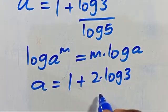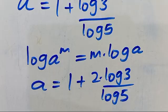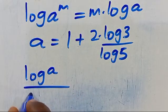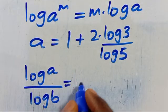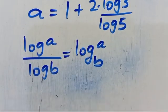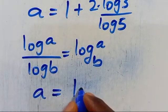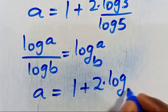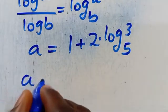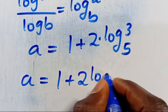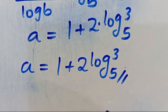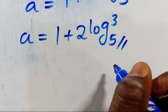Recalling that log a divided by log b equals log a in base b, we apply it here. So a equals 1 plus 2 multiplied by log 3 in base 5. Finally, the value of a is 1 plus 2 multiplied by log₅3.